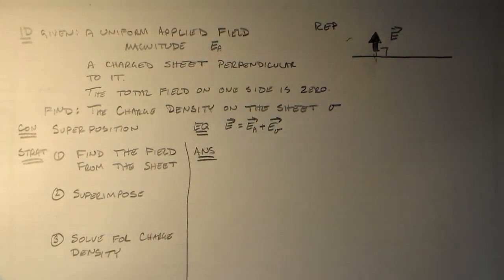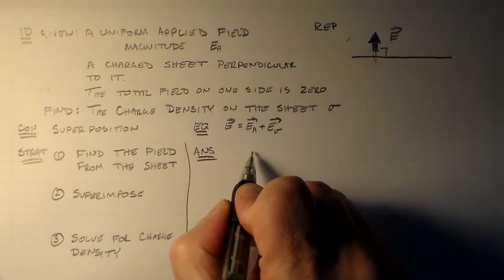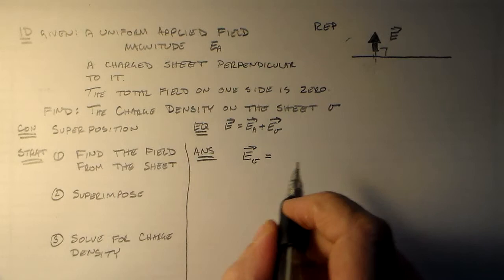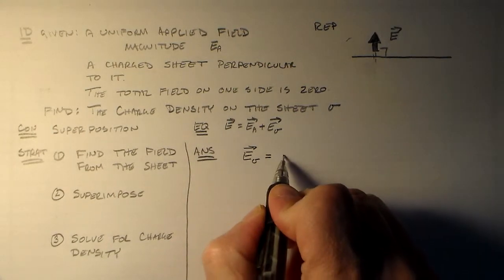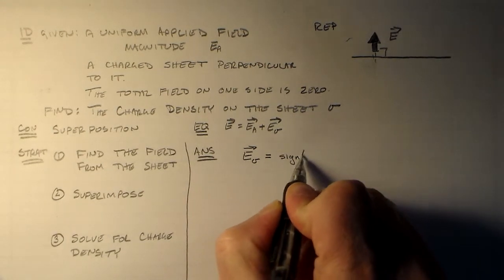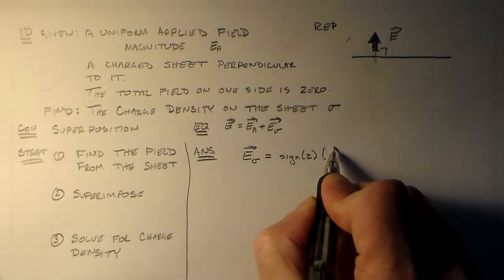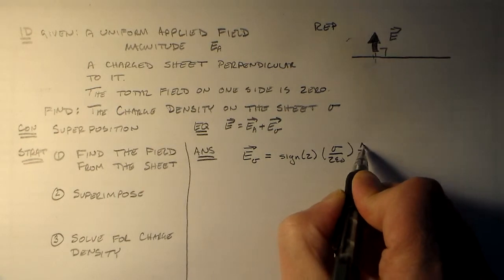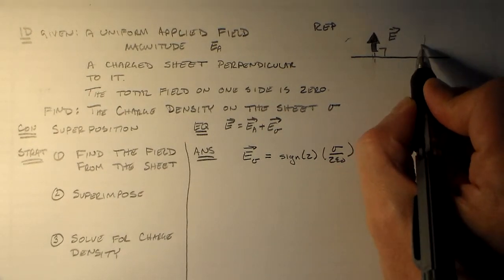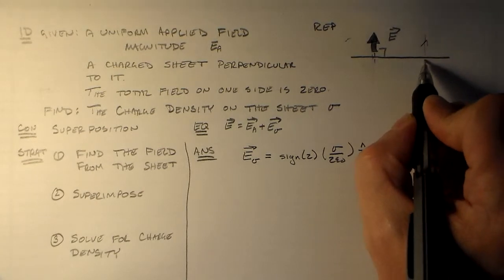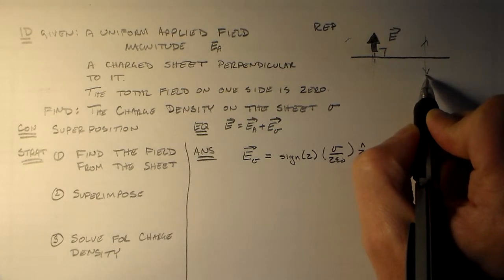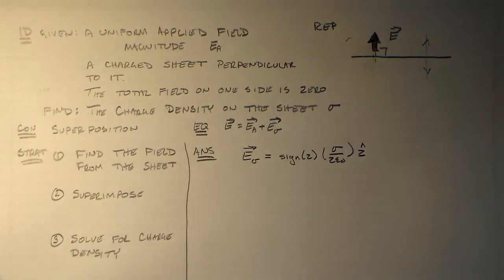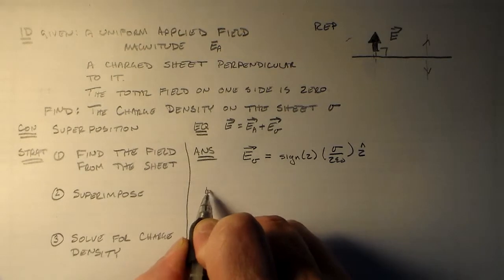So our answer's over here. Like I said, we know e sigma pretty well by now. If this is the z direction, then this is the sine of z times sigma over two epsilon in the z-hat direction, right? So up here it's some magnitude in that direction, and here it's the opposite, same magnitude in the opposite direction.